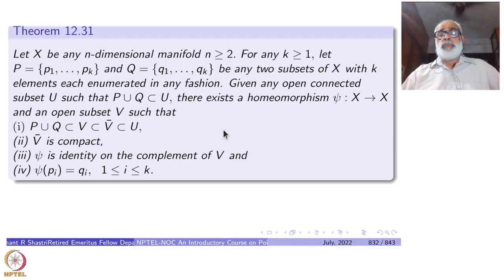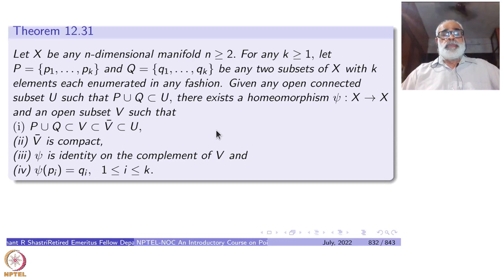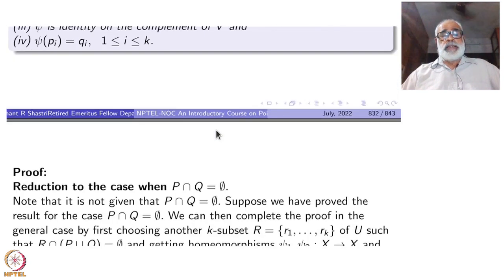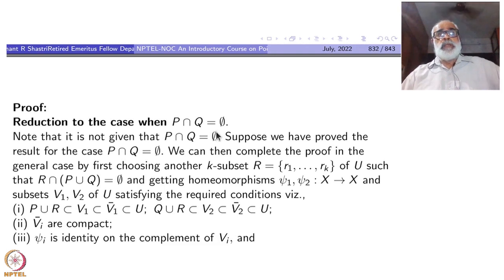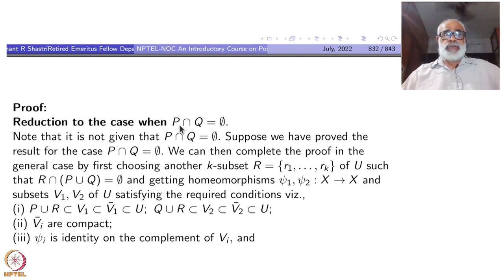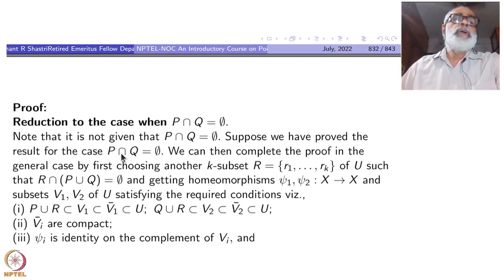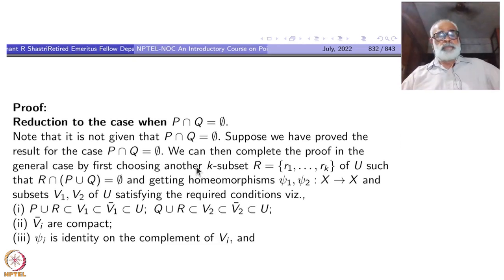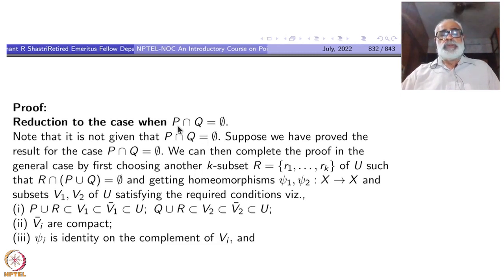Let us see how one proves it. We have prepared all the requirements already. First I will take the case where p and q are disjoint sets — they are finite sets with k elements. Logically this is not necessary, but writing down the proof becomes very easy with this approach. You can have different ways of proving this also. I choose this one: I assume that p and q are disjoint.